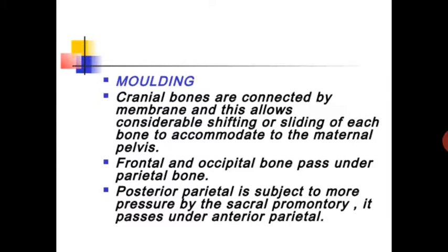Molding: cranial bones are connected by membrane, allowing considerable shifting or sliding of each bone to accommodate the maternal pelvis. Frontal and occipital bones pass under parietal bones. The posterior parietal is subjected to more pressure by the sacral promontory and passes under the anterior parietal.